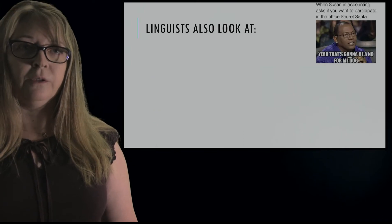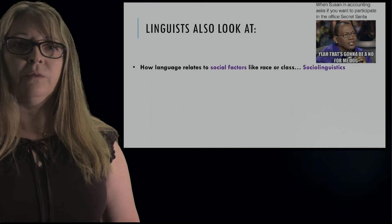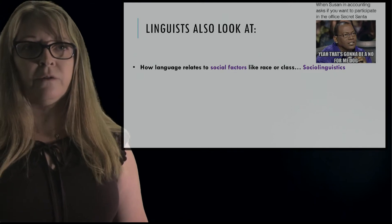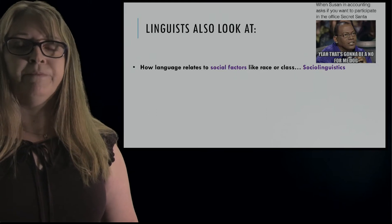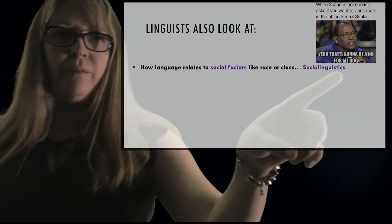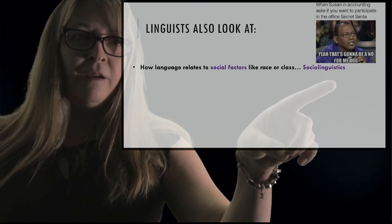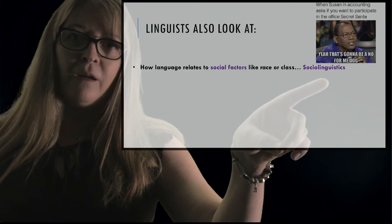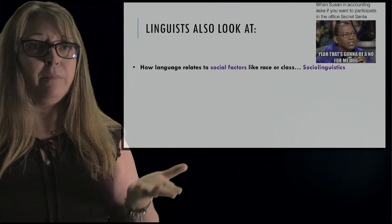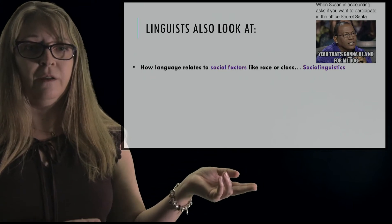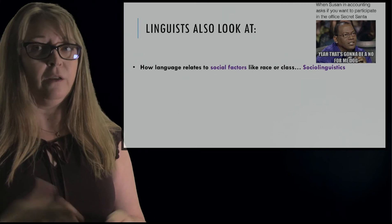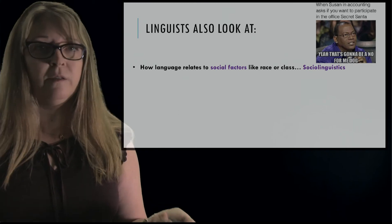Linguists also look at how language relates to social factors like race or class — that's sociolinguistics. For example, you see this meme where he says 'that's going to be a no for me, dog.' The word 'dog' might mean a certain thing within a certain speech community, but others might not really understand what he's saying.